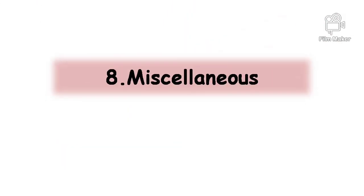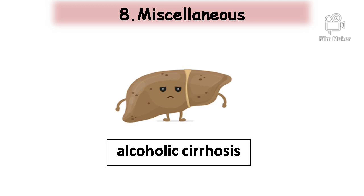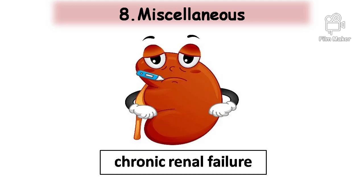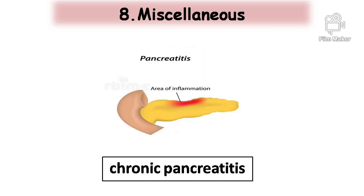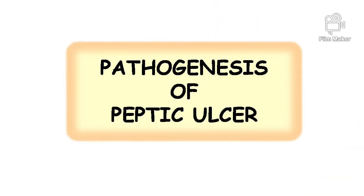Miscellaneous: duodenal ulcers have been observed to occur in association with various other conditions such as alcoholic cirrhosis, chronic renal failure, hyperparathyroidism, chronic obstructive pulmonary disease, and chronic pancreatitis. Pathogenesis of peptic ulcer — pathogenesis means the way in which the disease develops.